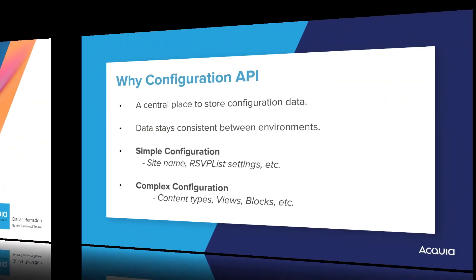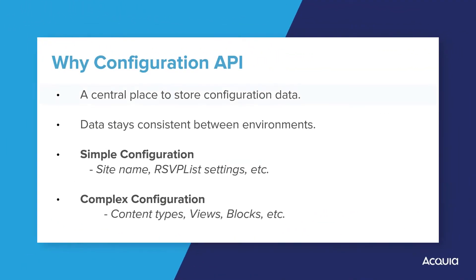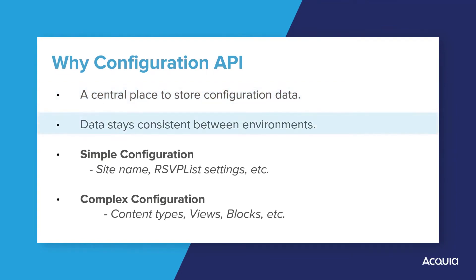The configuration API provides a unified approach for modules to store configuration data. Configuration data is data that stays consistent between the site environments — for instance, the development, testing, UAT, and production environments.